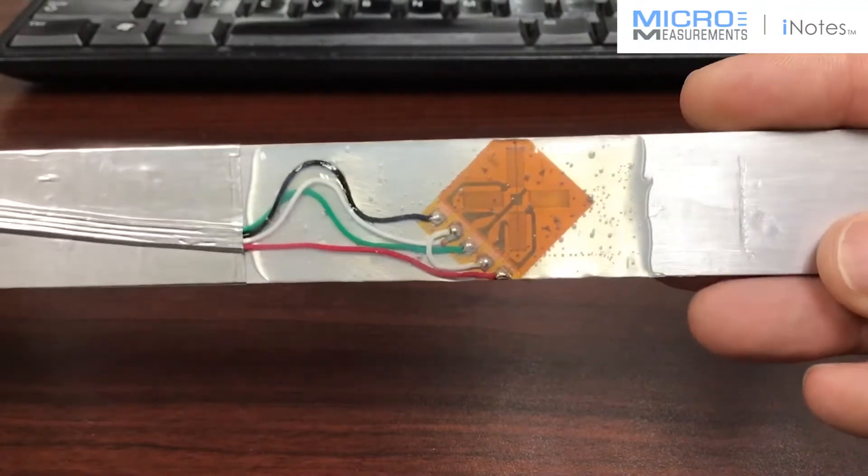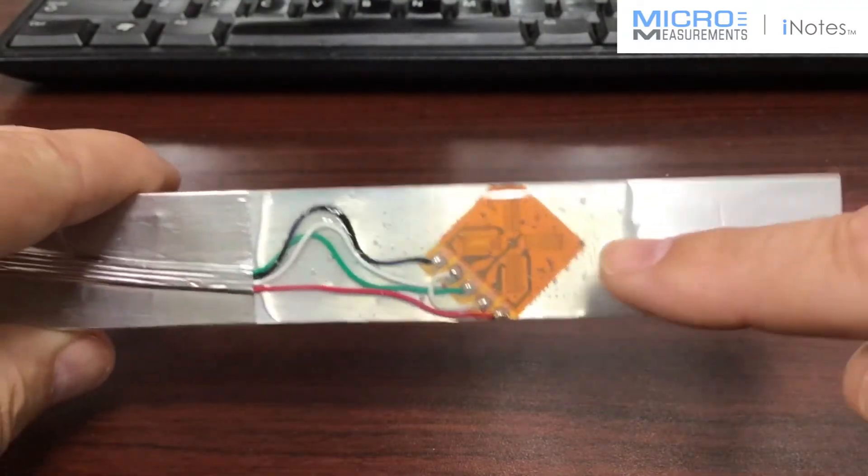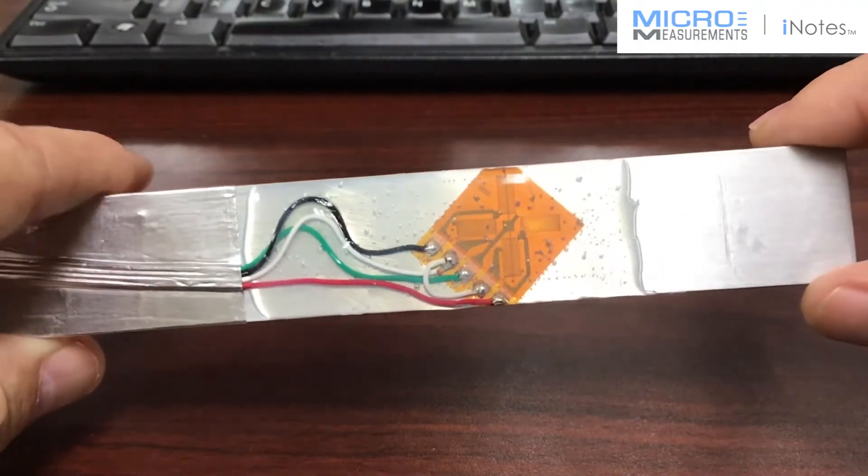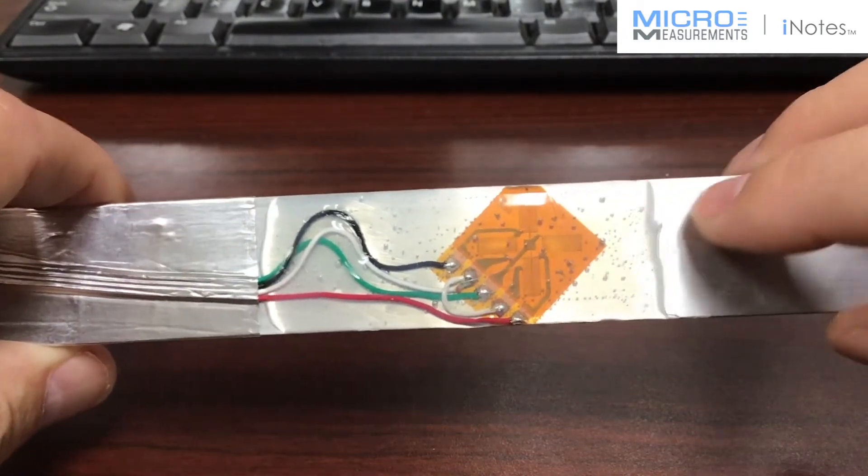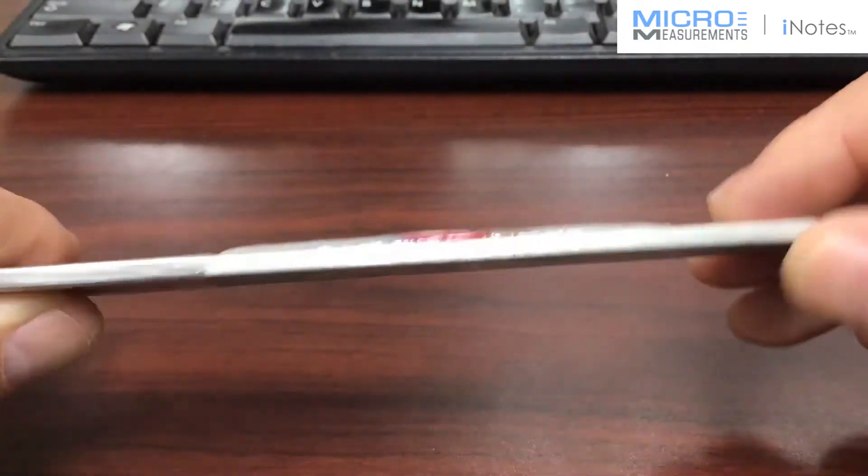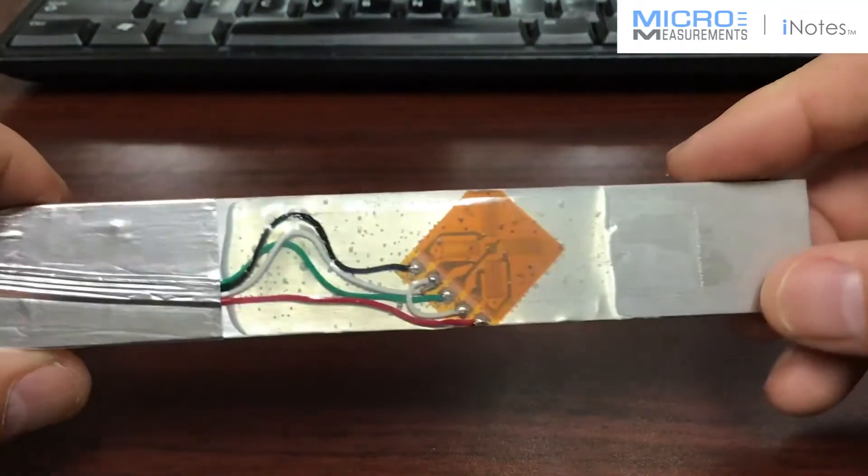So if you take a look at it again, it's the exact same strain gauge that's used for torsion, except now we've taken it, clocked it at a 45 degree angle, and now we're using it to measure bending that's in this aluminum bar.